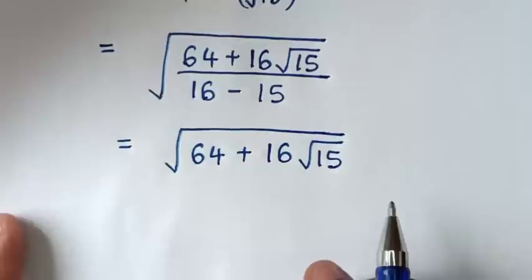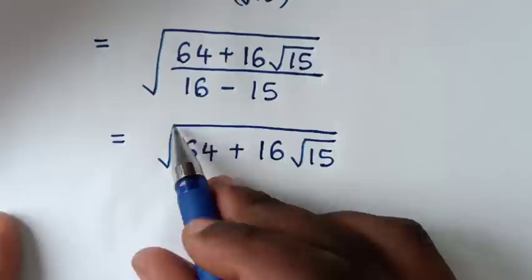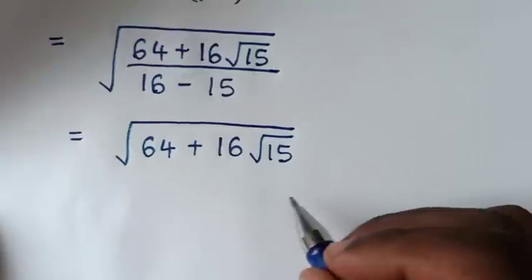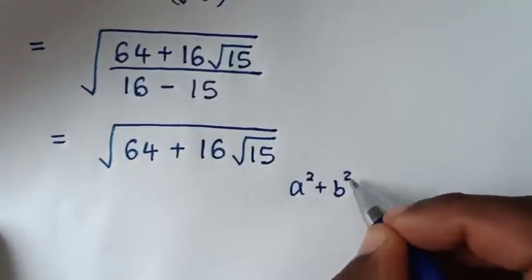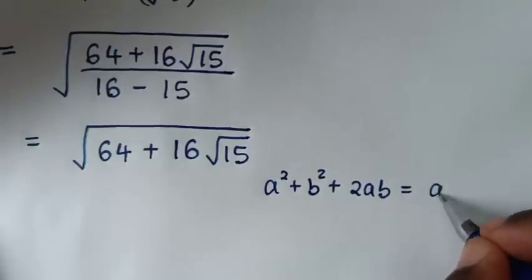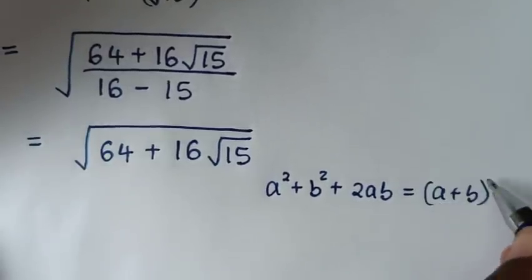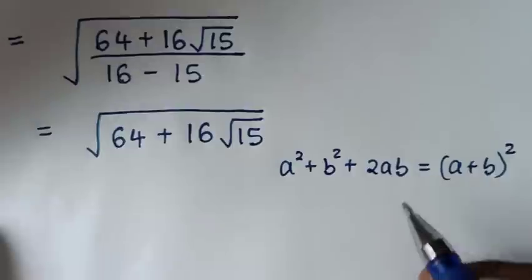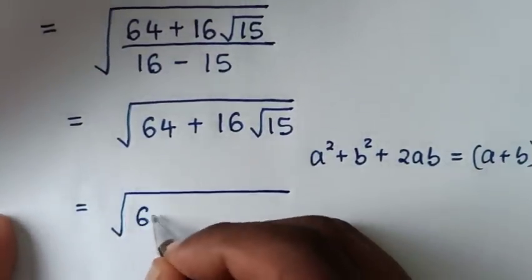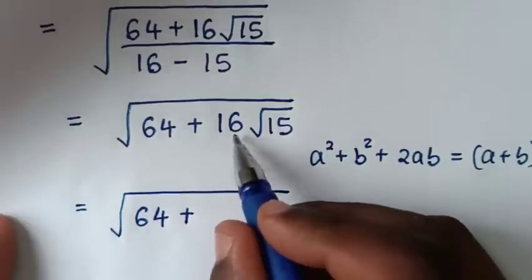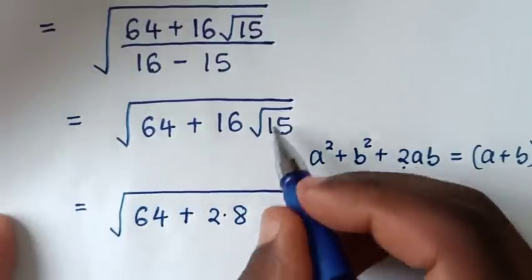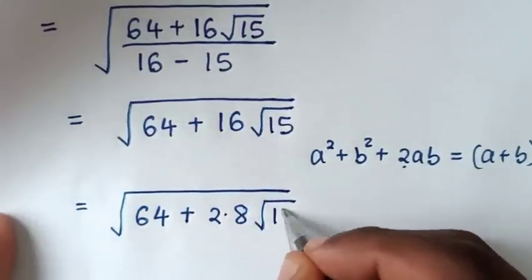Then in the next step, from here under this square root, we'll make it in the form of an expansion of the rule which is a squared plus 2ab plus b squared, which is the expansion of (a plus b) squared. So we'll make it into this form here. It will be equal to square root of 64 plus 16, and to get this 2, it will be 16 is 2 times 8, then times square root of 15.